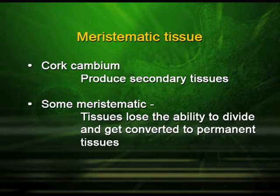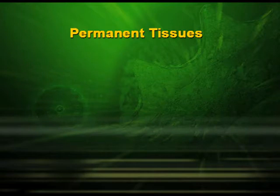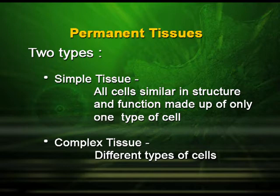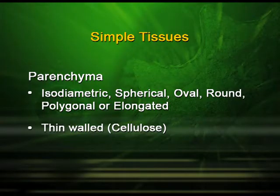Some meristematic tissues lose the ability to divide and get converted to permanent tissues. Permanent tissues are of two types. In simple tissues, all the cells are similar in structure and function and are made up of only one type of cell. Under simple tissues, the first is parenchyma. Parenchymatous cells are isodiametric; they may be spherical, oval, round, or polygonal.